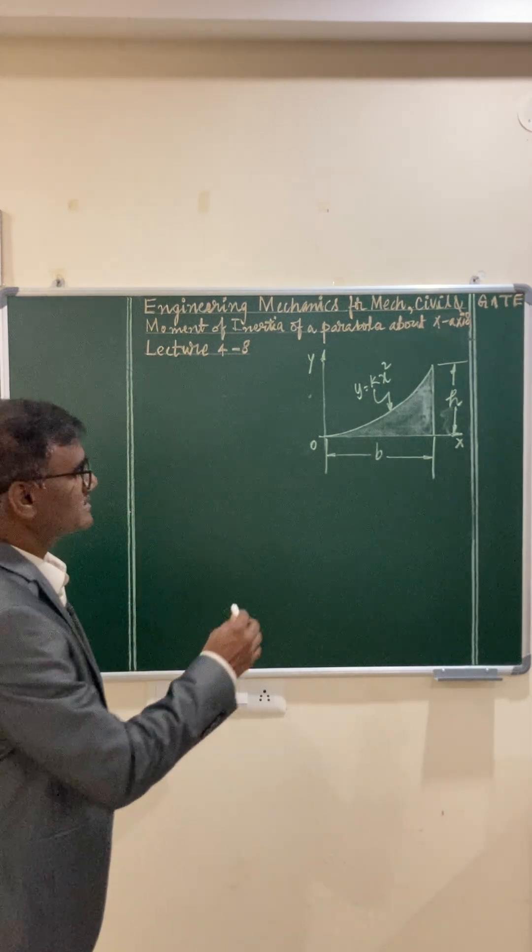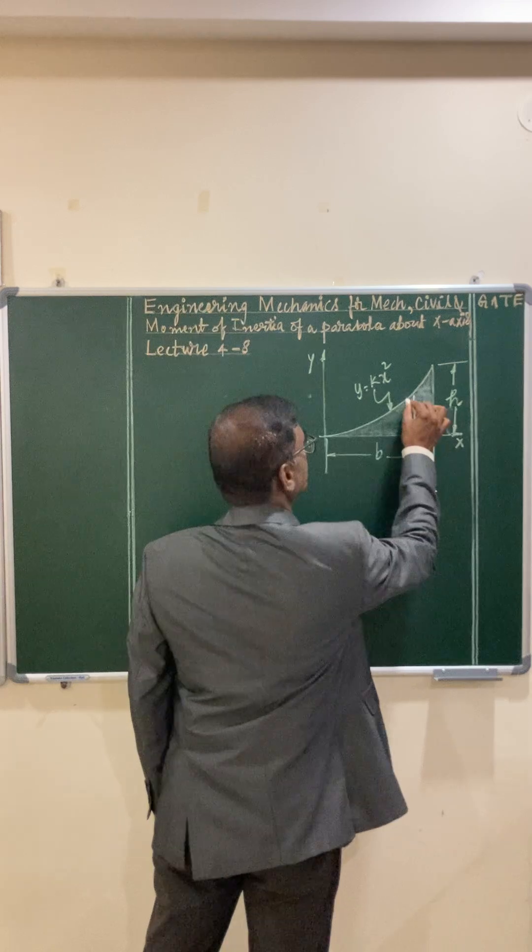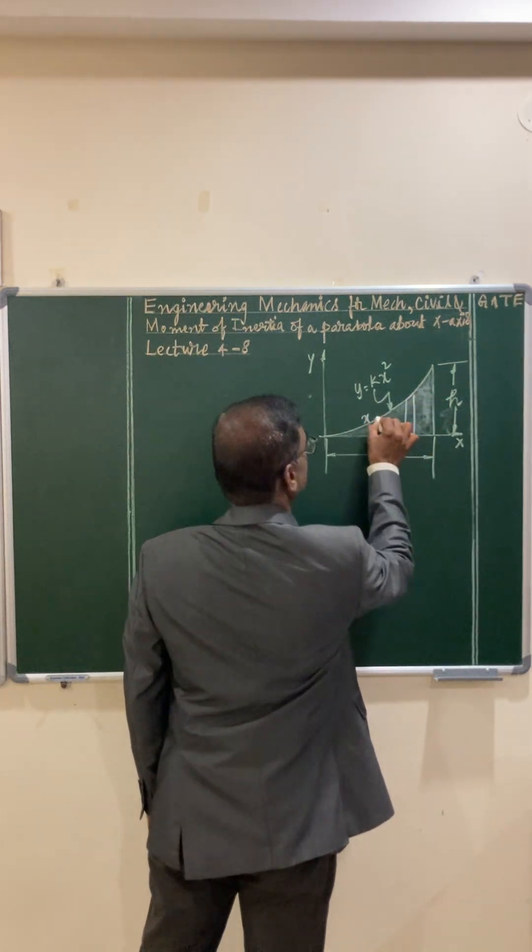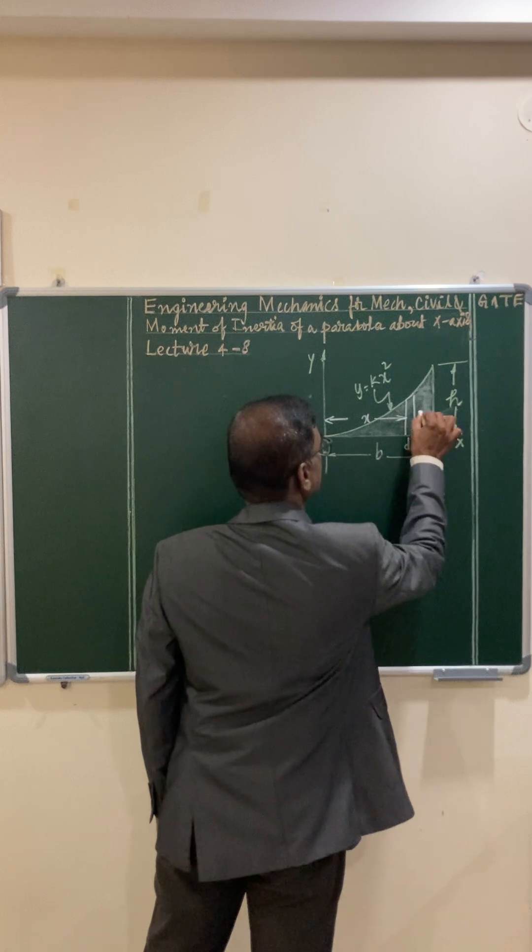To calculate this, let us consider an element, a vertical strip, at a distance x from the y-axis. The elemental thickness is dx and height is y.